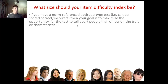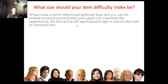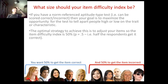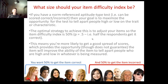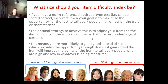Notice that item three, where half get it right and half wrong, gives the optimal opportunity for telling people apart — assuming it's not multiple choice. For a norm-referenced aptitude test, the optimal strategy is to adjust items until the item difficulty index reaches 50%, so half get it right and half get it wrong. This maximises the spread of scores, giving the best opportunity to distinguish high and low scorers, though it doesn't guarantee it.